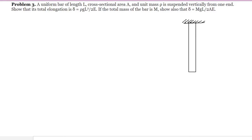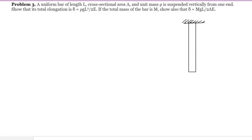Problem number 3: a uniform bar of length L, cross-sectional area A, and unit mass rho is suspended vertically from one end. Show that its total elongation is delta equal to rho G L squared over 2E, and if the mass of the bar is M, show that the deformation delta is equal to MGL over 2AE.